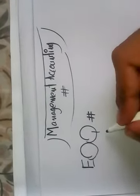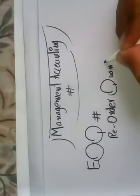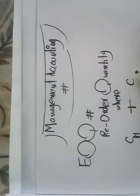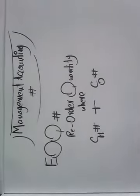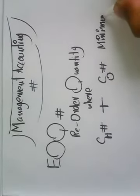My name in accounting, Economic Order Quantity. What is meant by Economic Order Quantity? It is a reorder quantity, the order quantity where you are using holding cost, cost of holding plus cost of ordering. Holding cost and ordering cost both is at minimum level.